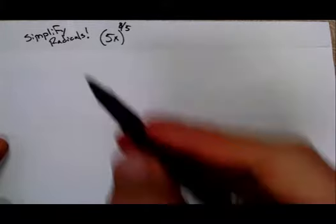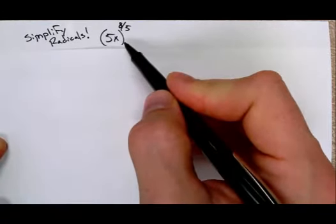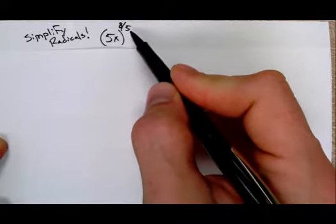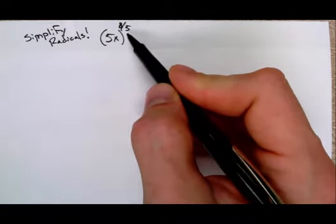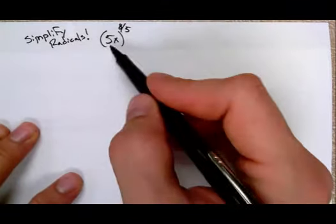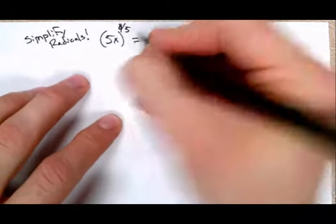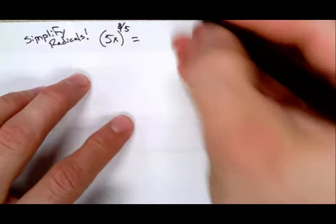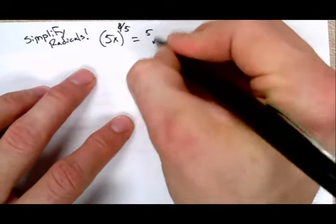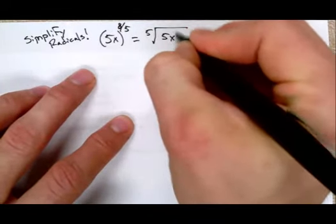In this video, we're going to talk about how we can simplify expressions that have an improper fractional exponent. So how do we turn that into a radical first and then be able to simplify it? Right away, if you remember your power over root, you know that this can be written as the fifth root of 5x to the eighth.